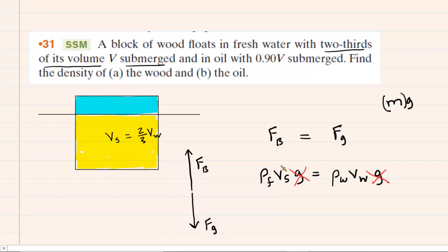So, this V sub S right here, we will make a little substitution. We're going to plug in two-thirds multiplied by the volume of that entire wooden block. And now, if you look carefully, you should see another term that can cancel out on both sides. It's this V sub W. You can divide that out.